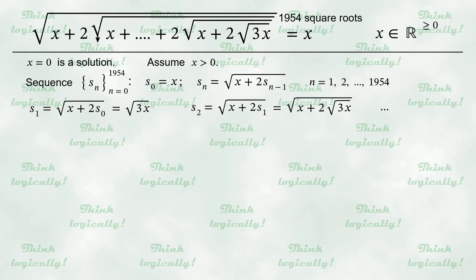It can be easily seen that the index of S is the number of square roots involved in the formula for it. Therefore, the last element of the sequence, S with index 1954 will have 1954 roots, corresponding to the whole left-hand side of the given equation. And the left-hand side of the equation must be equal to x. So we get an equation S with index 1954 equals x. While at the same time x is the starting element of the sequence. So our sequence has the same element at start and at the end.